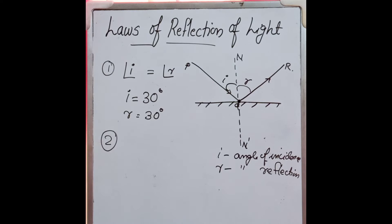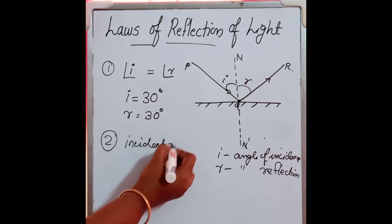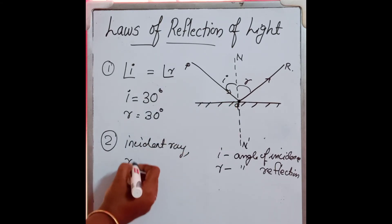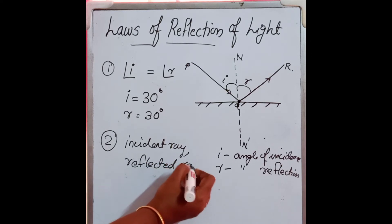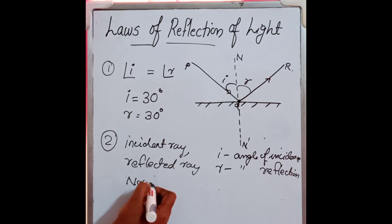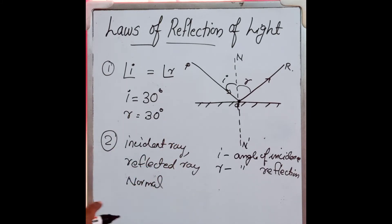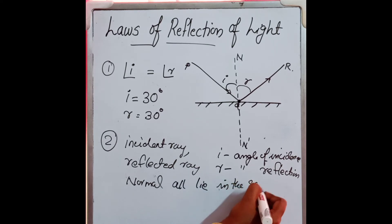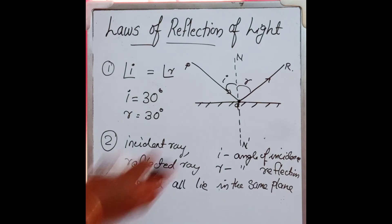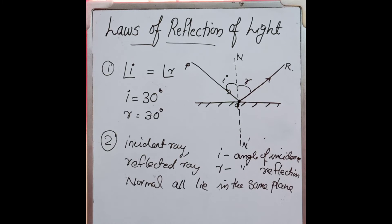The second law of reflection of light: the incident ray PQ, the reflected ray QR, and the normal N-N' — all lie in the same plane. That means all these rays will be in the same plane. When the plane changes, these rays will not exist. So, the incident ray, the reflected ray, and the normal all lie in the same plane. These two are the laws of reflection of light.